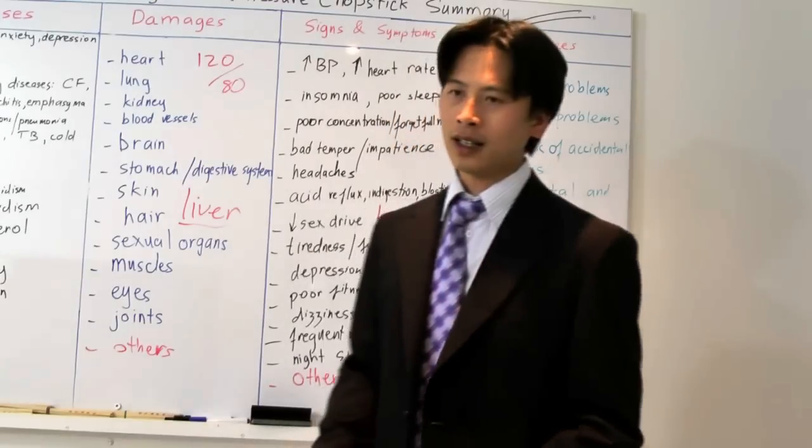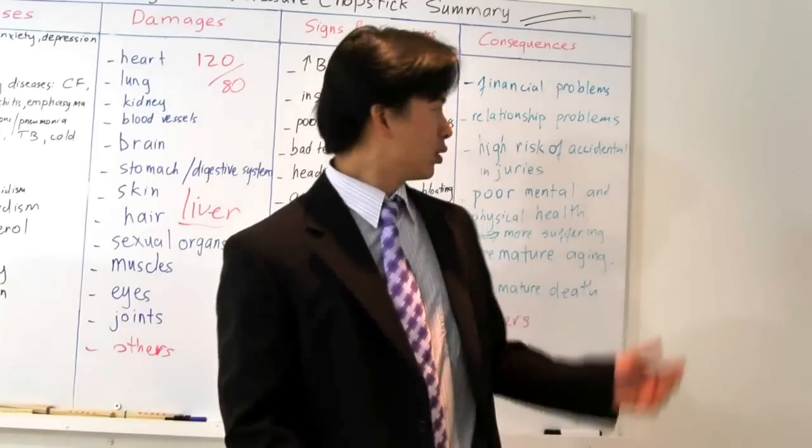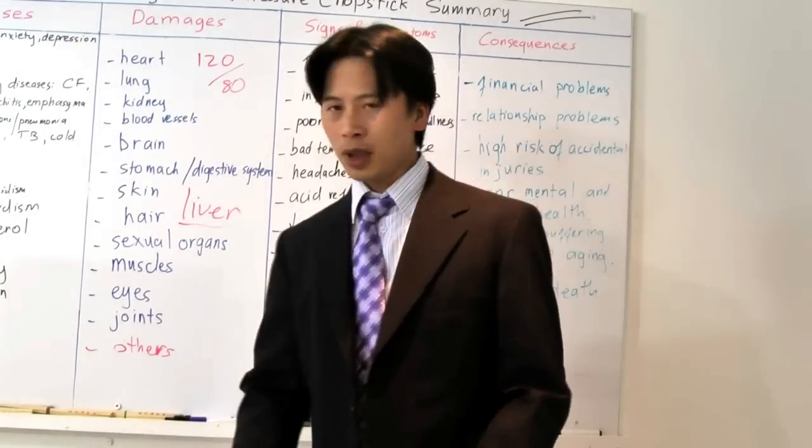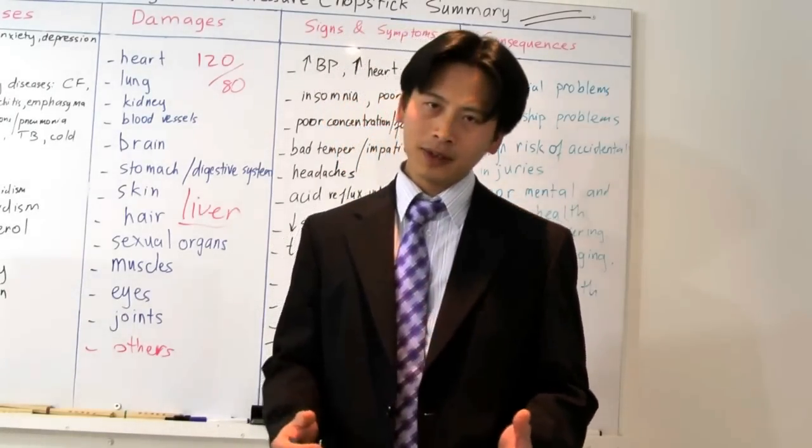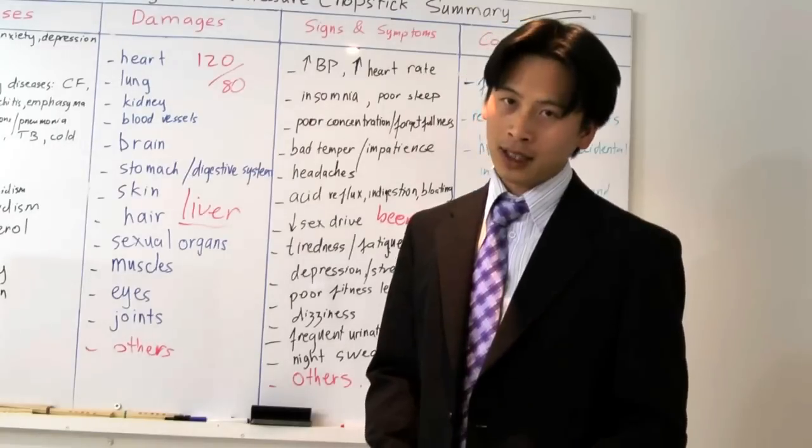You can die of a stroke. You can die of accidental injuries. You can die of a rupture of one of the major blood vessels in your body. Or you can die slowly and suffer.